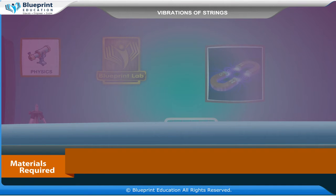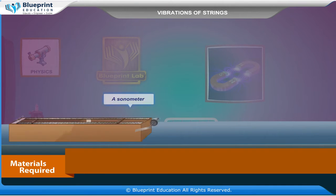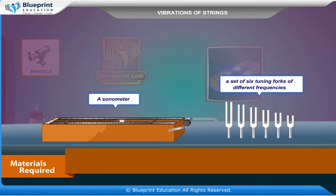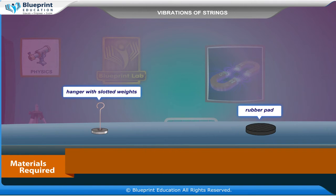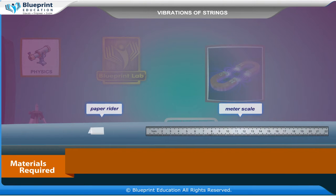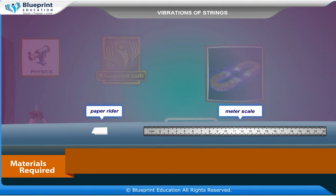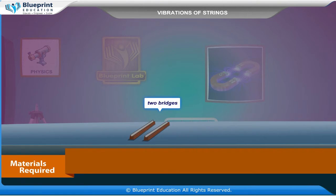Materials required are: a sonometer, a set of six tuning forks of different frequencies, a hanger with slotted weights, a rubber pad, a paper rider, a meter scale, and two bridges.